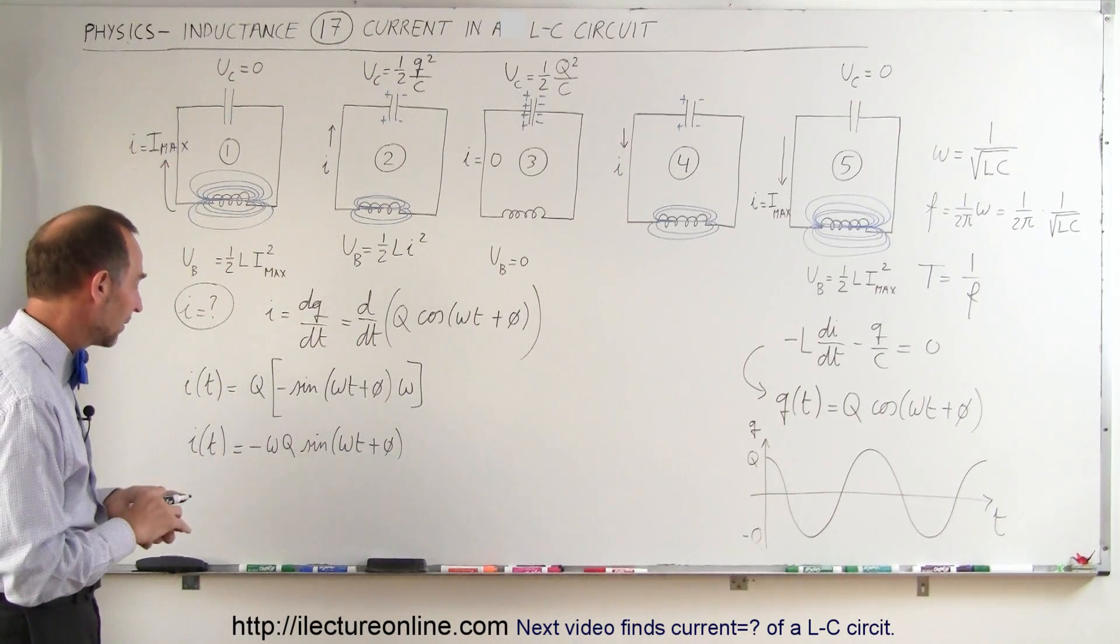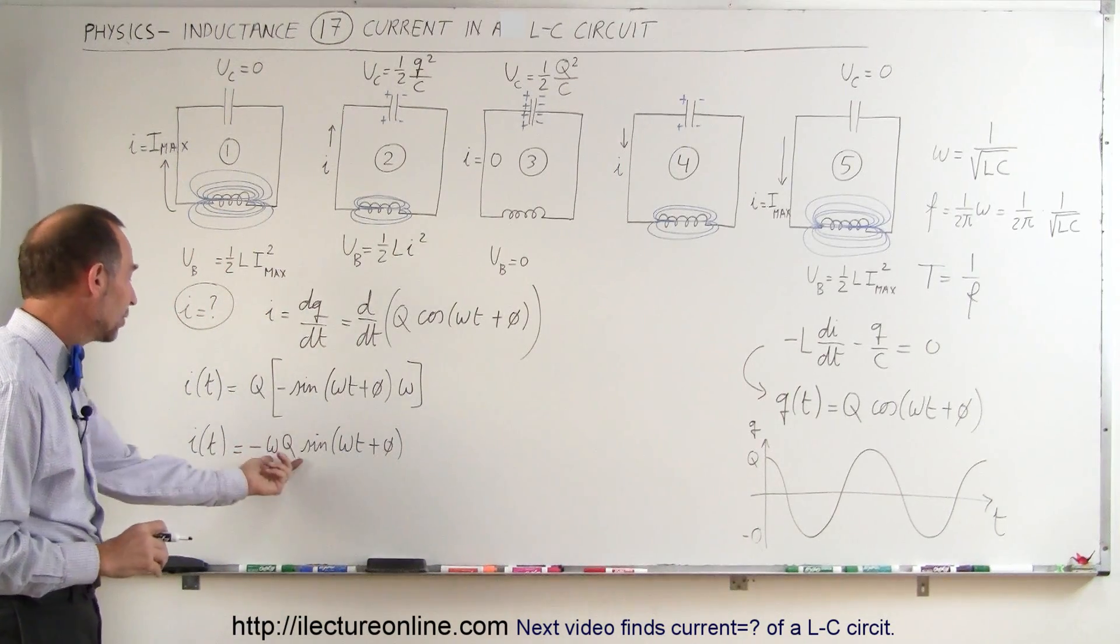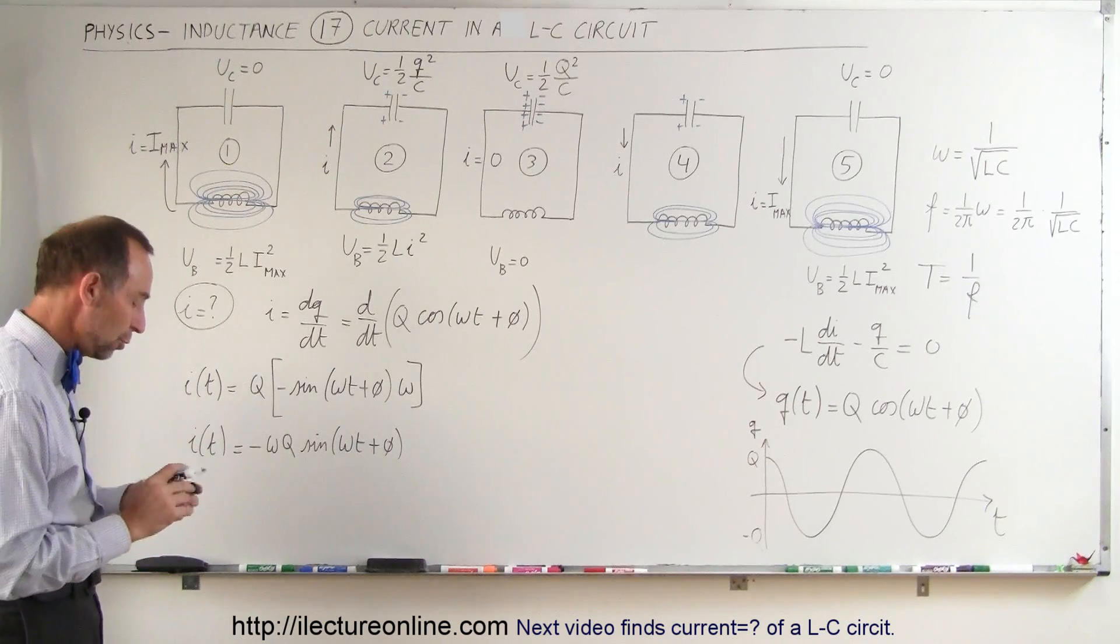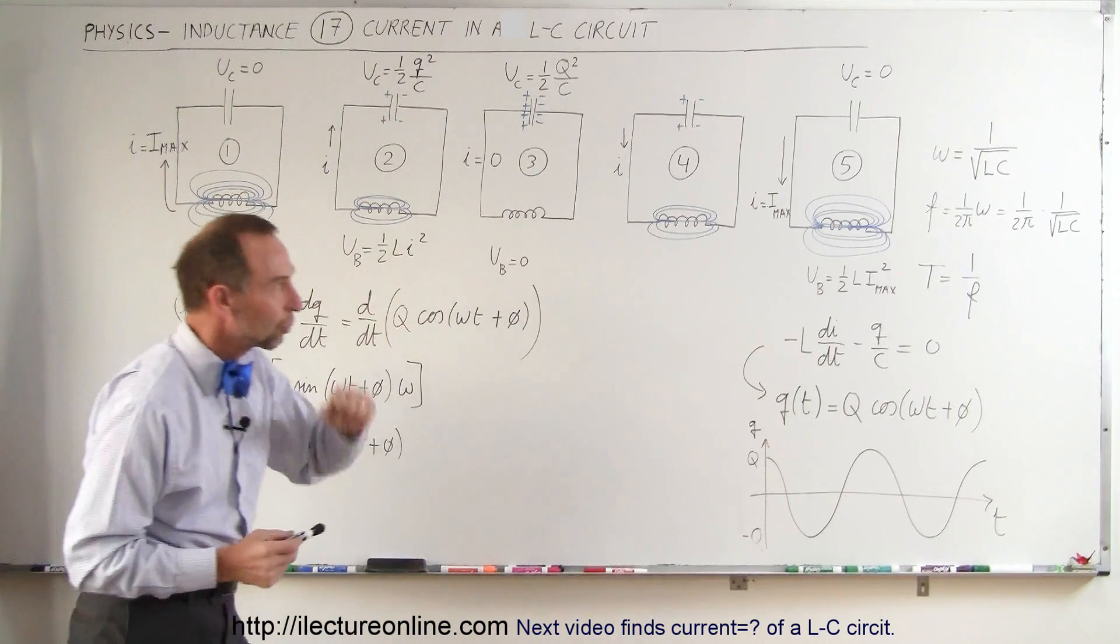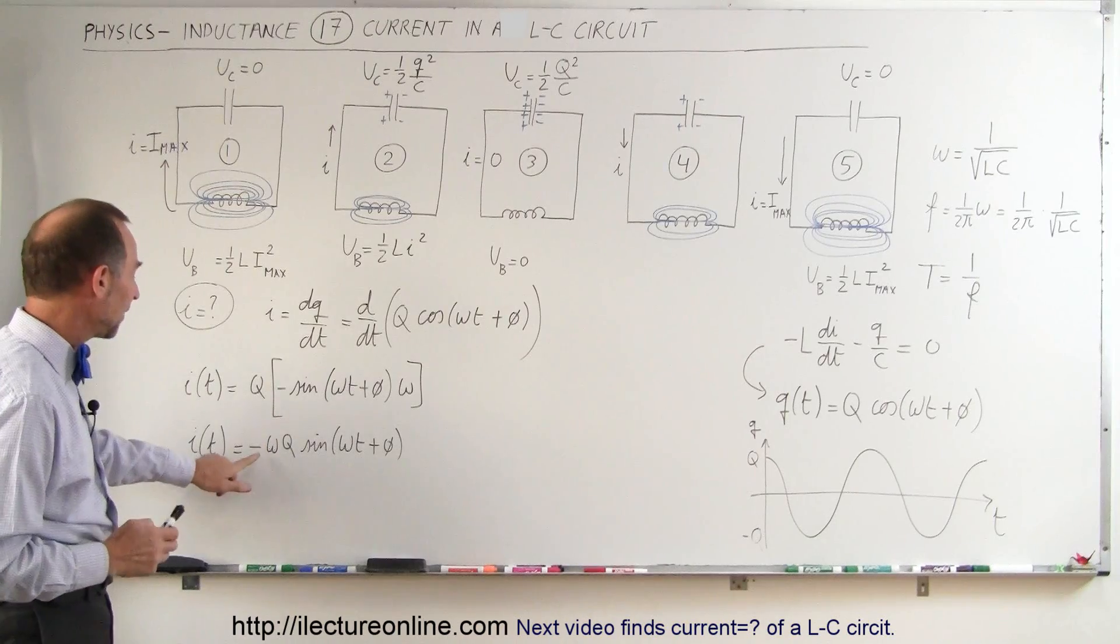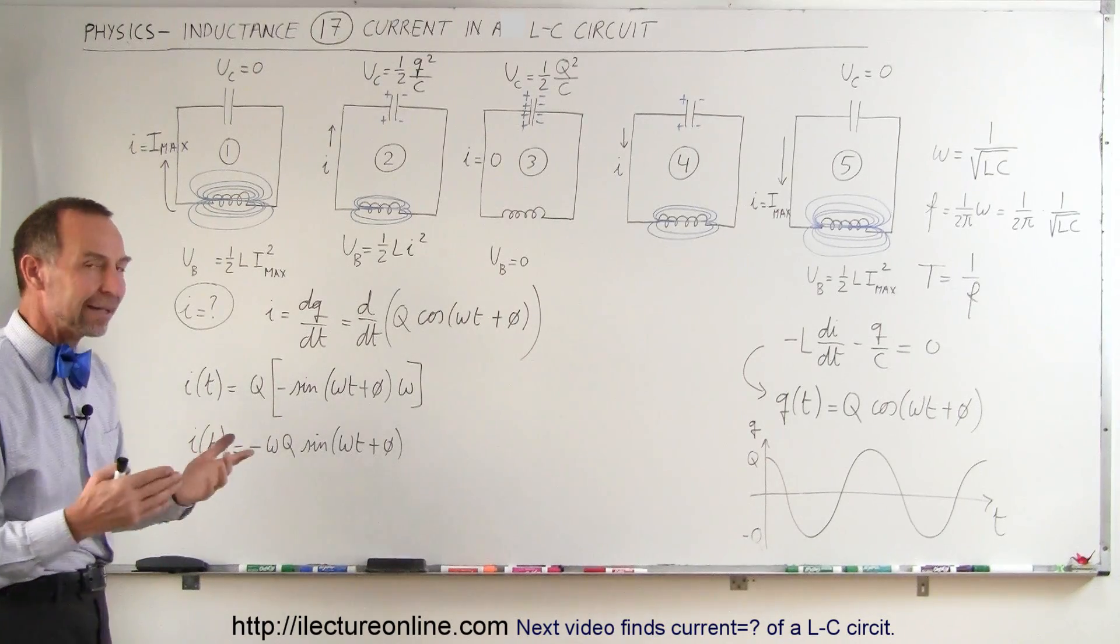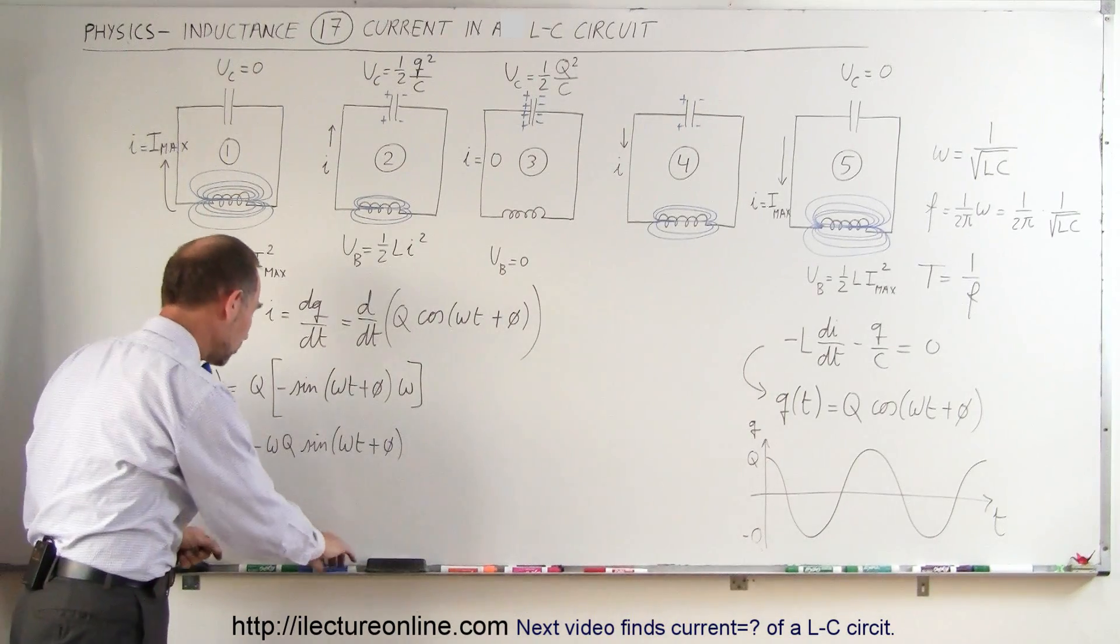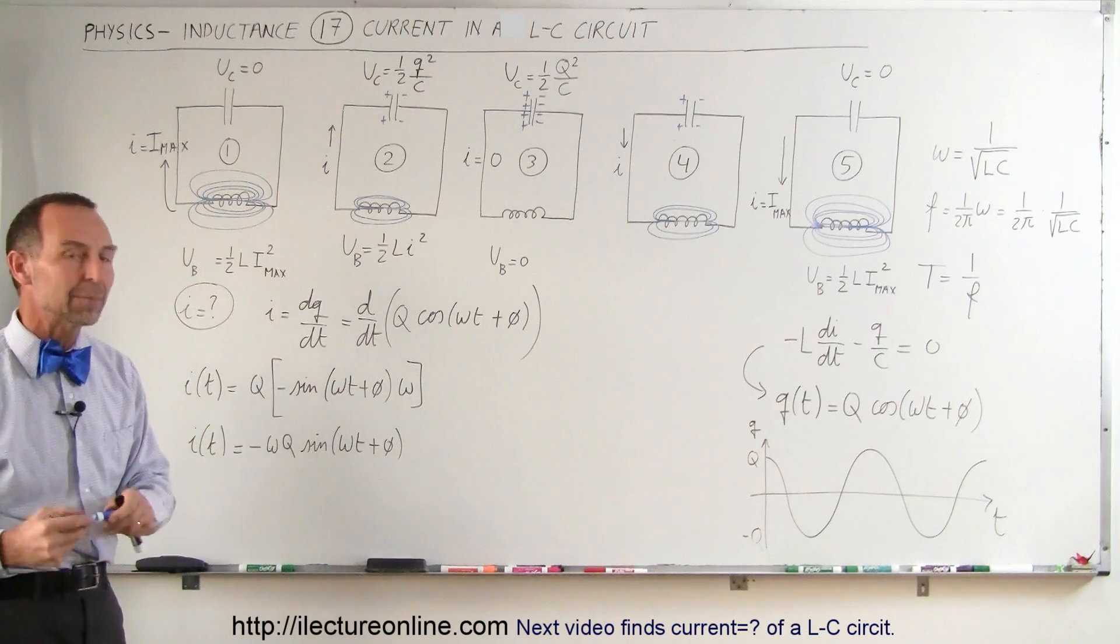So how would we graph that? Well, we know that the magnitude of course will be omega times Q. Omega is one over the square root of L times C. And also we have a negative sign here and the sine. So first what I'm going to do is I'm going to graph the sine of omega t plus phi.